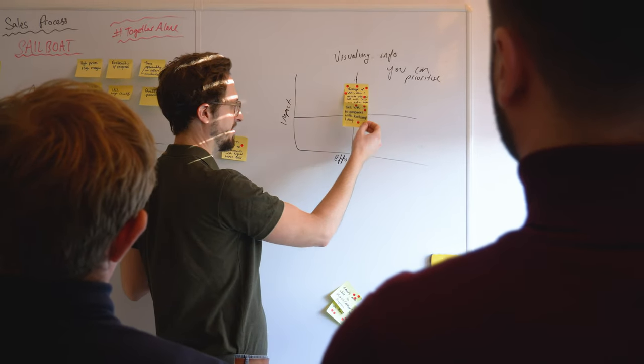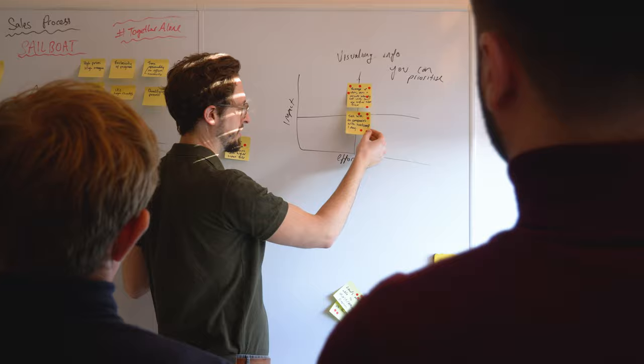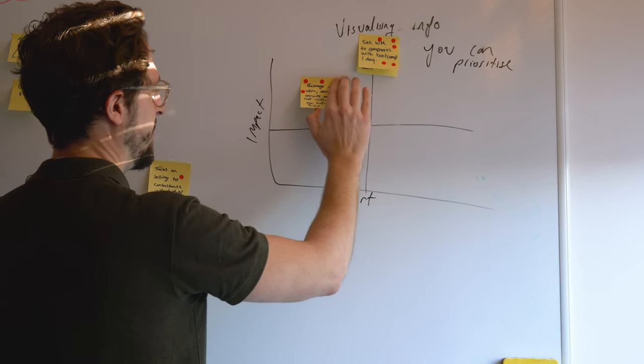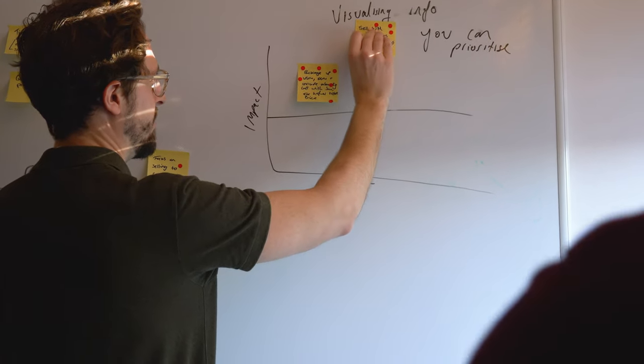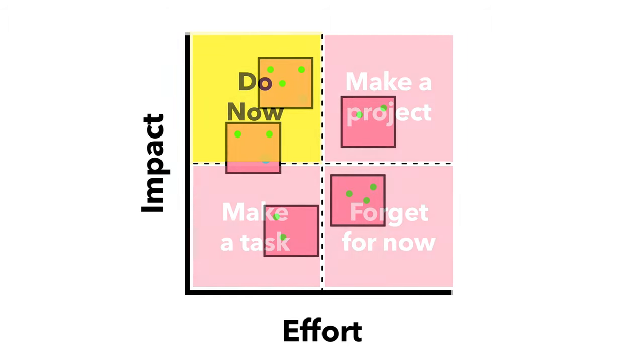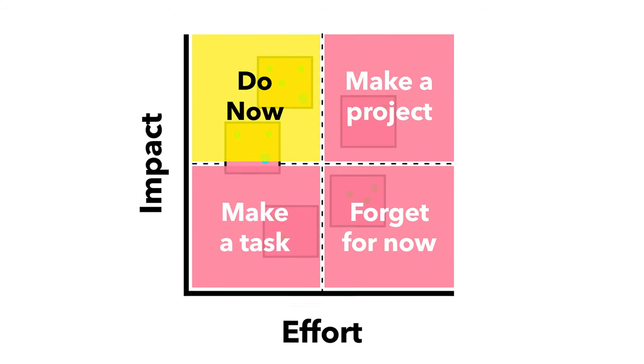If you're trying to prioritize things, an effort-impact scale action board is always a classic — a good old McKinsey exercise — to get things in order. So you could just do a massive one of those, but then it just depends on the specific challenge.